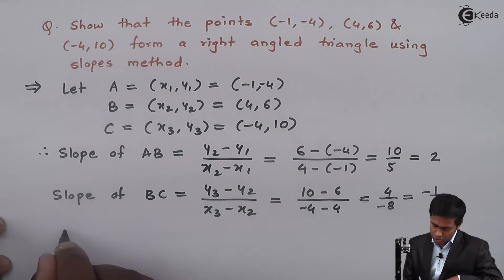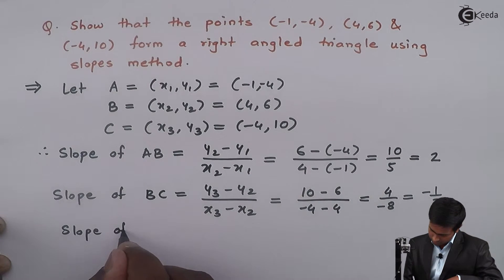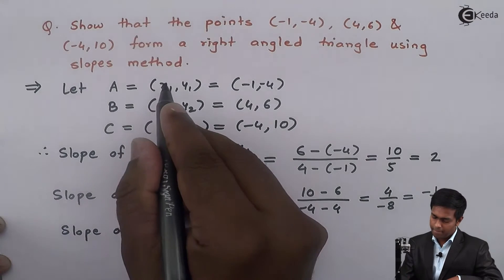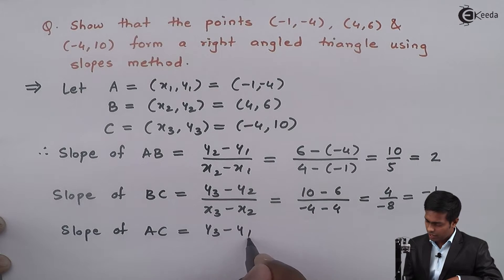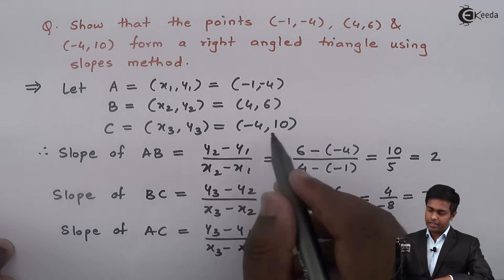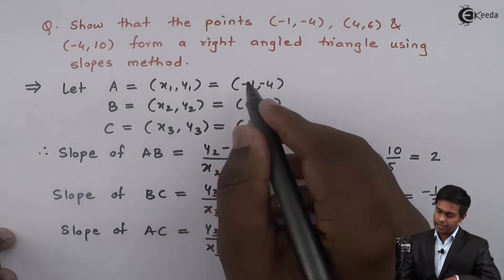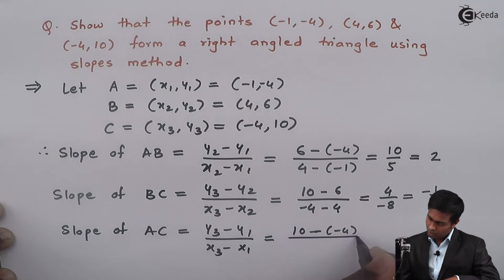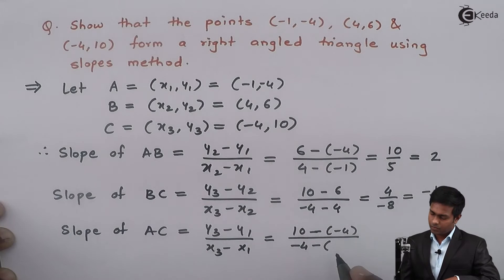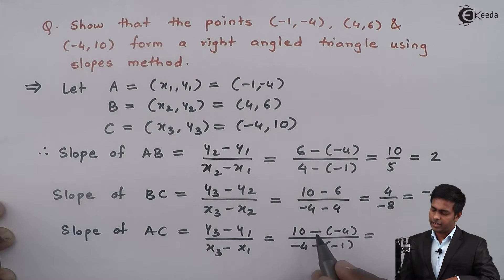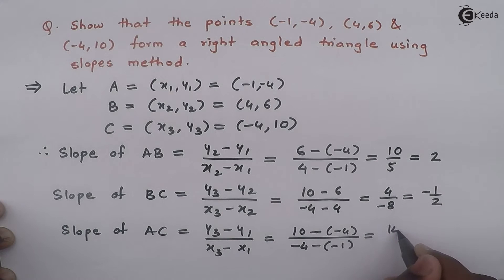Similarly, slope of AC equals (y₃ - y₁)/(x₃ - x₁). The value is (10 - (-4))/(-4 - (-1)) = (10 + 4)/(-4 + 1) = 14/(-3) = -14/3.